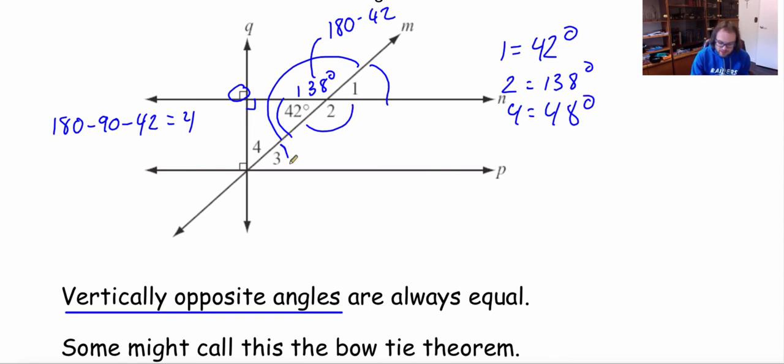Now we're looking at this 3 here our last one to try and figure out. This here must be 90 degrees because we have a 90 there. This is 48 and that makes a 90 so then 3 must be equal to 42 degrees.